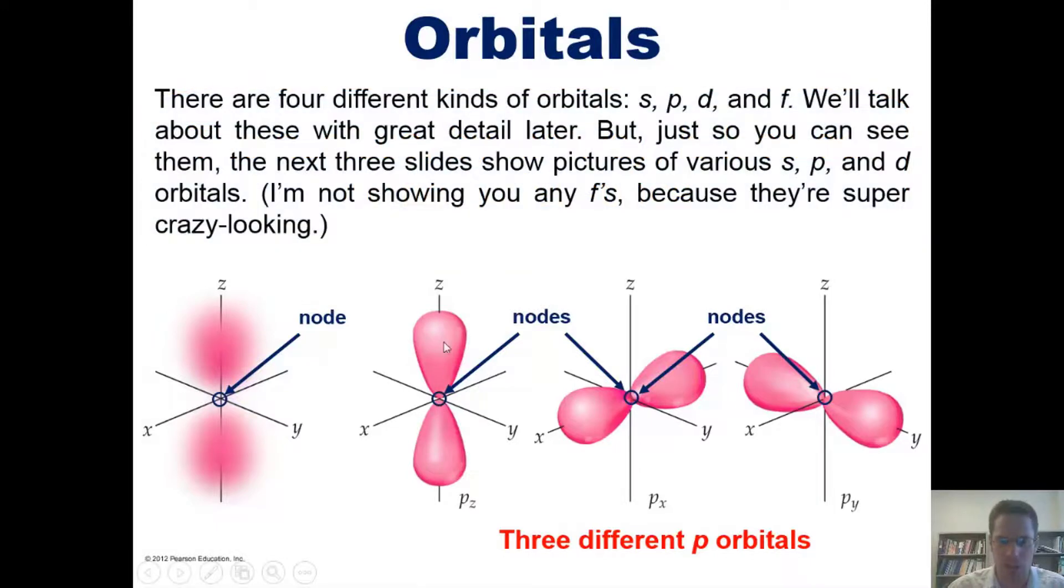So that begs the question: how in the world then does an electron go from this upper space down to this lower space without ever being at the space in between? The answer to that question is: blah.